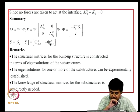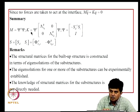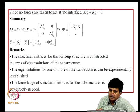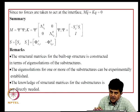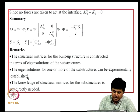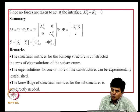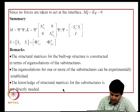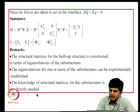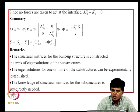Since no forces act at the interface, the equation becomes M * Q double-dot + K * Q = 0. Importantly, these matrices M and K are derived purely in terms of the eigen solutions of substructures A and B in the free interface form—you do not need the structural matrices for A and B. The eigen solutions for one or more substructures can be experimentally established. This is the method known as component mode synthesis with free interface.